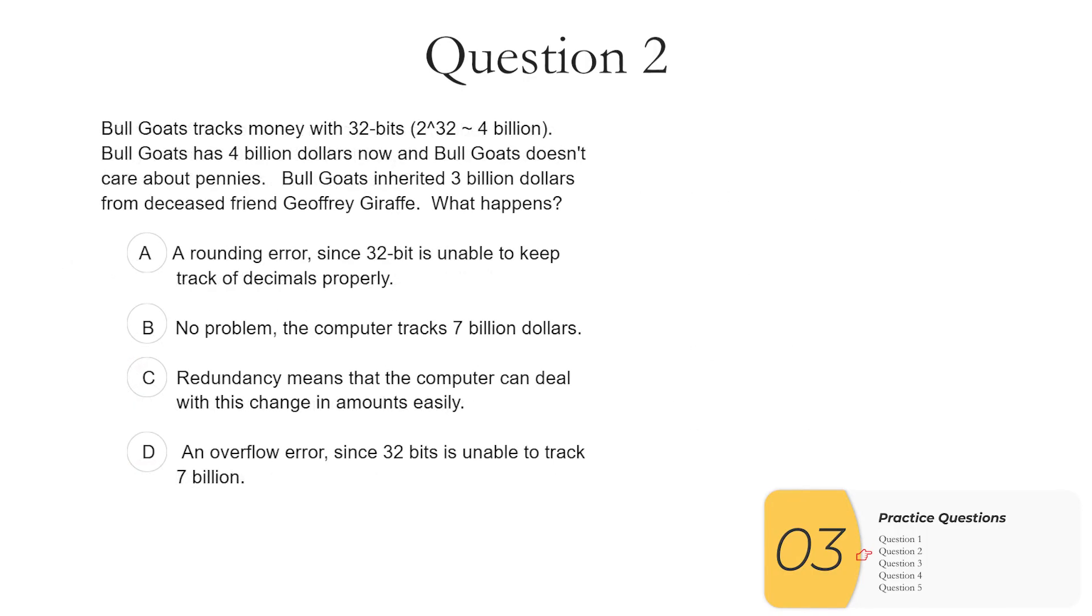Question two, Bull Gates tracks money with 32 bits, and 32 bits is equal to 4 billion. Bull Gates has $4 billion now and doesn't care about pennies. Bull Gates inherits $3 billion from deceased friend Jeffrey Giraffe. What happens? This is a similar problem to the previous problem, except we're not telling you straight away it's an overflow error. You have to recognize it, given that 2 to the 32, which is what you can track, is 4 billion, and we can't go higher than that. But looking at the answers, you know it's not A, because there's no decimals involved at all. It's not a rounding error. It's not B either, because with 32 bits, I can only go up to 4 billion. So I can't track 7 billion, not without more bits. C is true when we're talking about fault tolerance and routers, but it's not relevant to this question. So the answer is D, it is an overflow error. Remember, I can only track up to 4 billion, but I need to be able to track 7 billion. Can't say exactly what happens, but you know there's going to be an error.